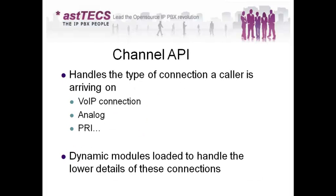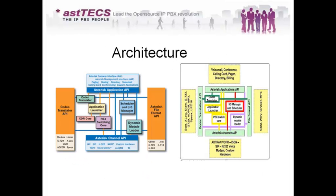By now you have understood the different architecture components in Asterisk: the Codec Translation API which handles codecs, the Application API which handles Asterisk applications like paging, dialing, and voicemail, the File Format API which defines what format files are recorded in — such as .wav or GSM — and the Channel API which handles whether the call is from SIP, IAX, FXO, or GSM.